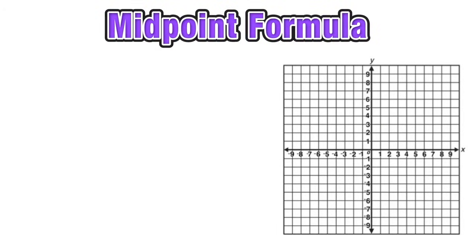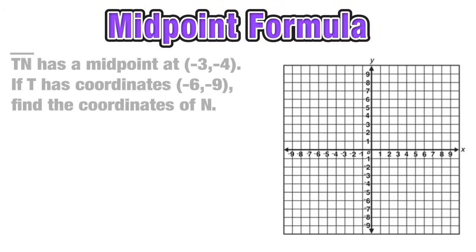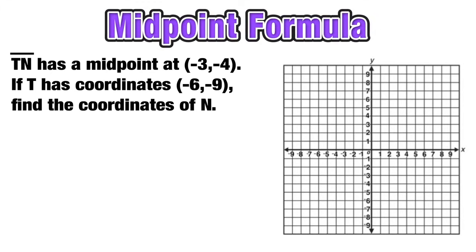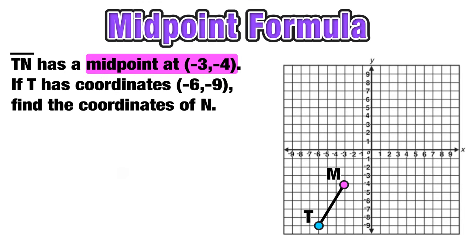Our final example is slightly more advanced. This question is not asking us to find the midpoint — instead, it gives us the midpoint of line segment TN at (-3, -4) and one endpoint T at (-6, -9). What we want to find is the coordinates of the other endpoint N. We know where the center of the line segment is and one endpoint; we need to find the other.